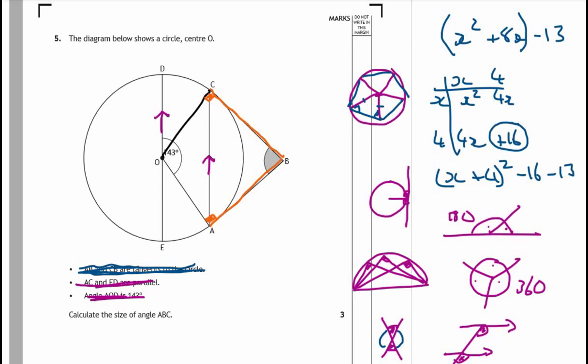First thing we're going to do is look where we've got some information and try to chase. The first thing they told us is that this angle is 143. So I would instantly want to fill out this angle in here. That's going to give us 37. And then I think, what if I draw a line between here and here? This angle is going to be the same as this angle because that's a radius and that's a radius. So 180 minus 37 is 143, divide that by two gives us 71.5.